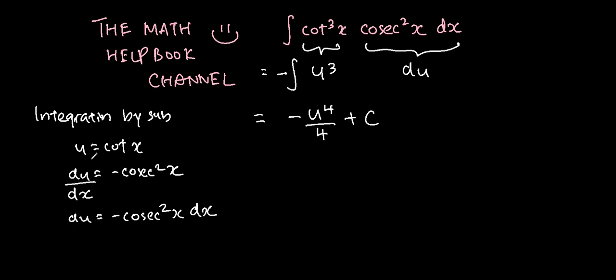Substituting u back, or substituting cotangent x back, we get negative cot⁴x over 4 plus c. And that's about it for this question.